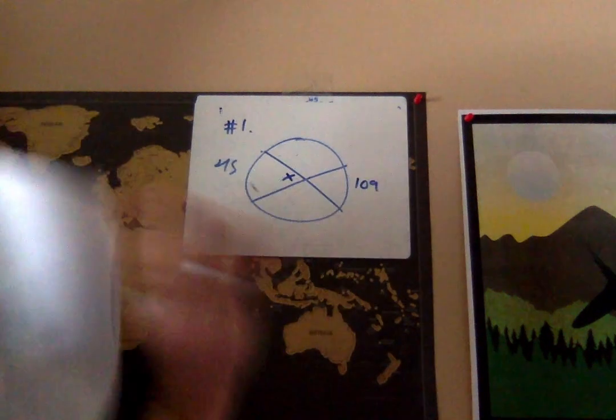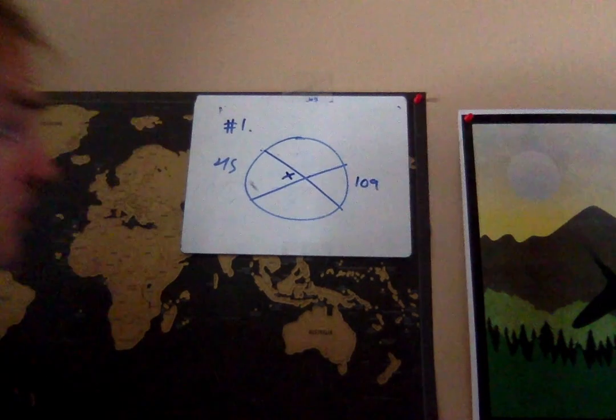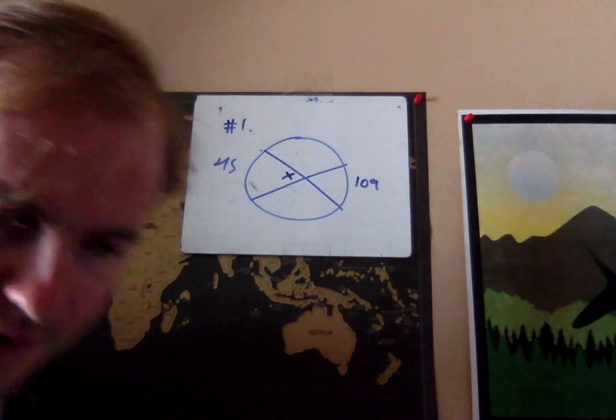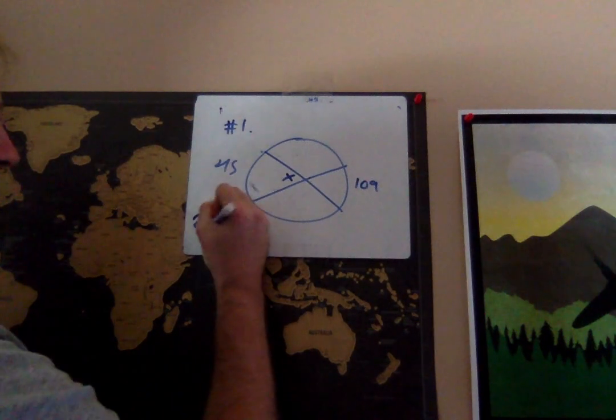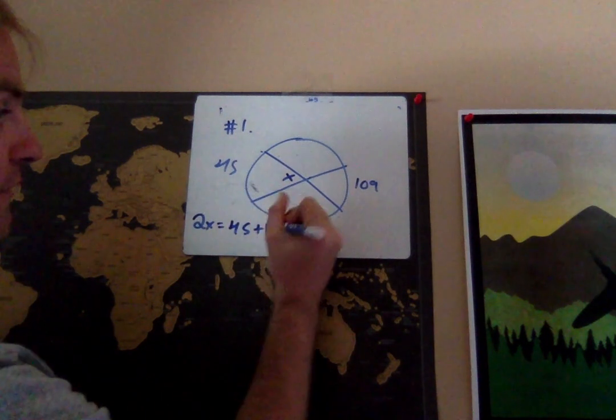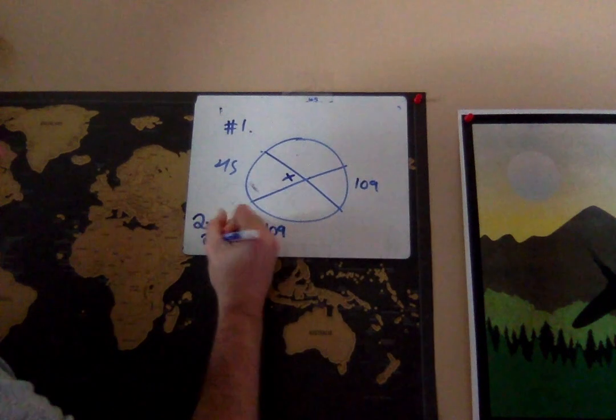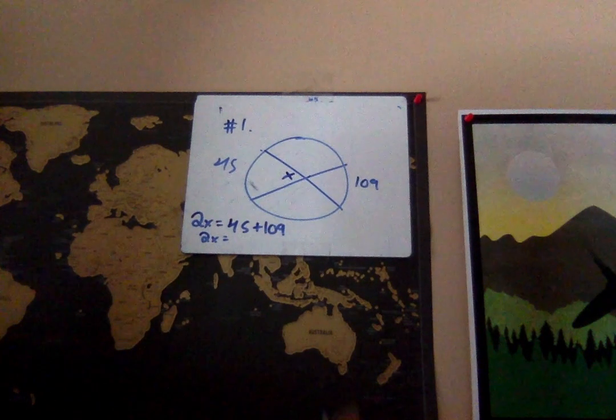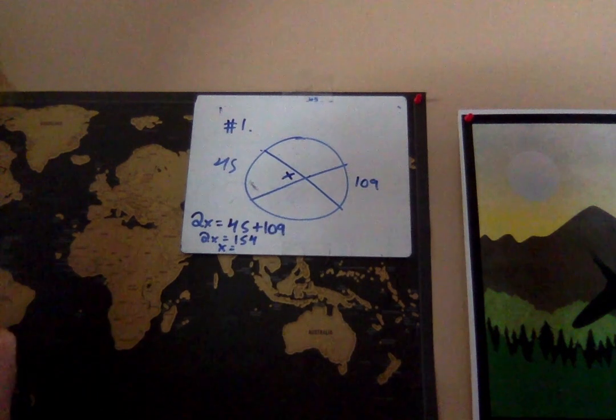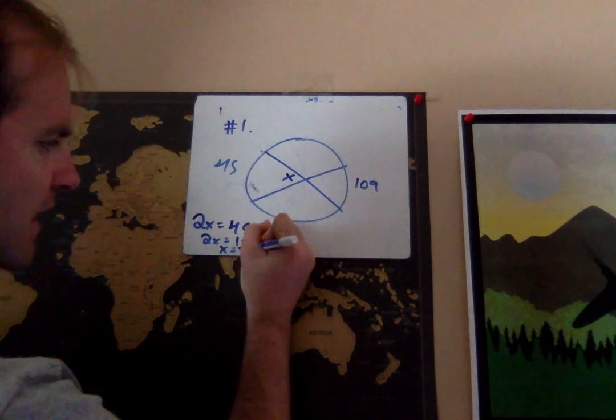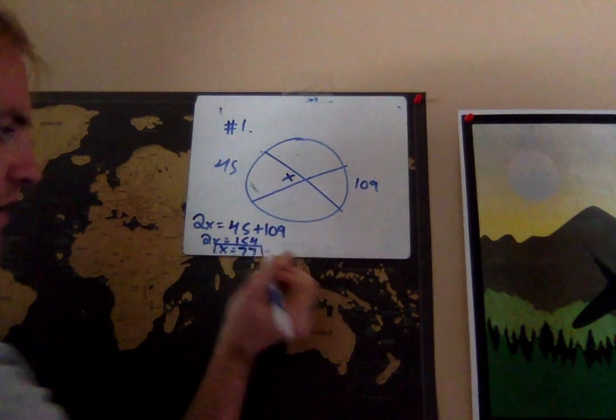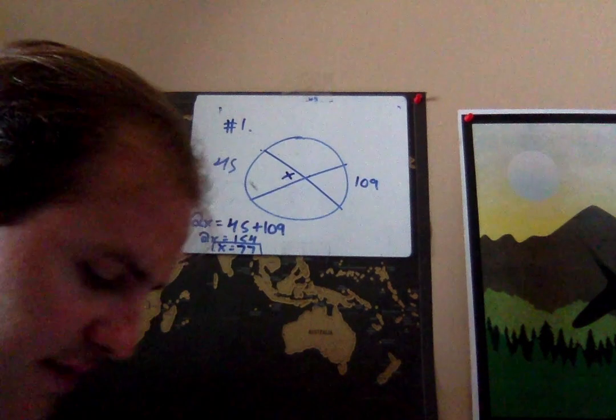It doesn't matter which way you do this. You can say that this is half of these two added up, or you can say it takes two of these to make these. My personal preference is to say it's going to take two of this to equal these two added up. So 2X equals 45 plus 109. When I do the math, I get 154, and thus X is half of that, which is 77. So my angle measure would simply be 77 degrees.